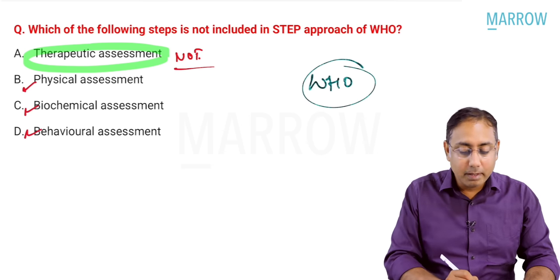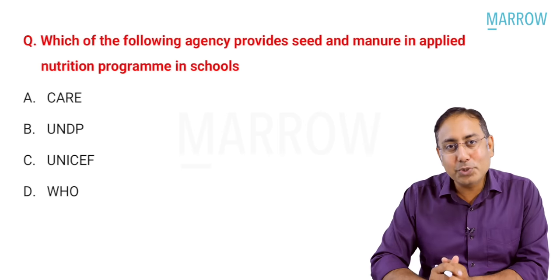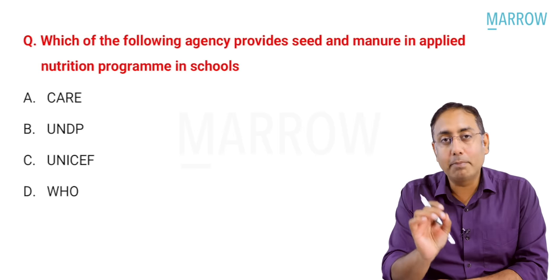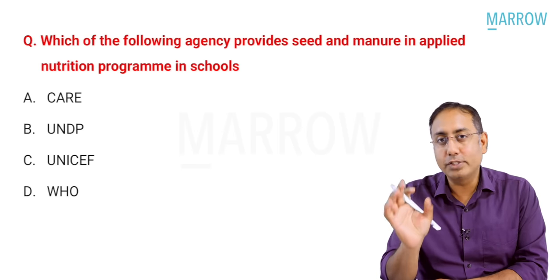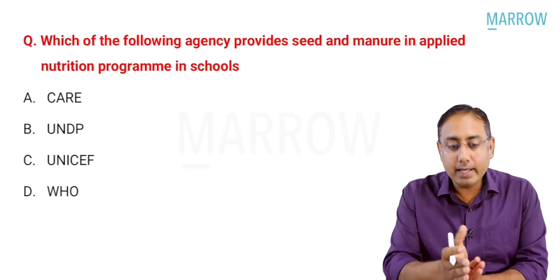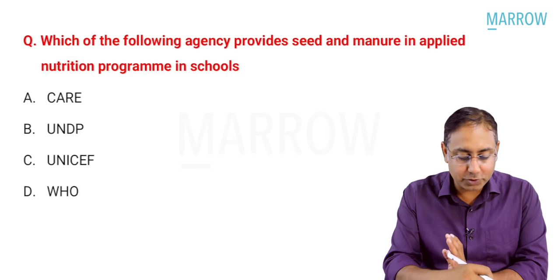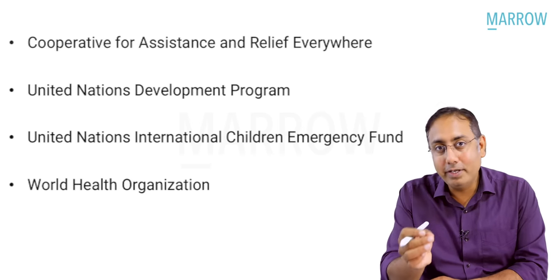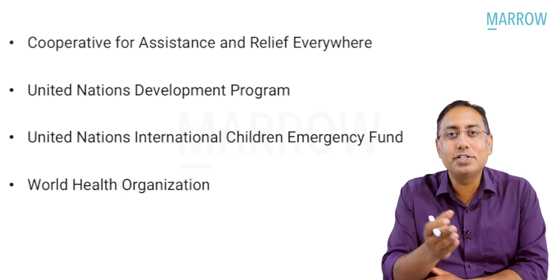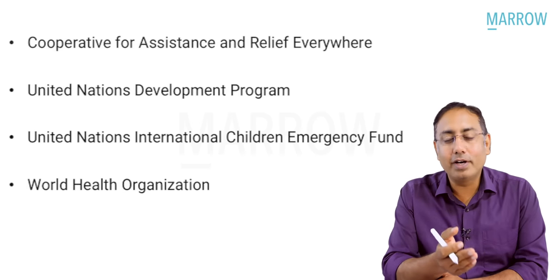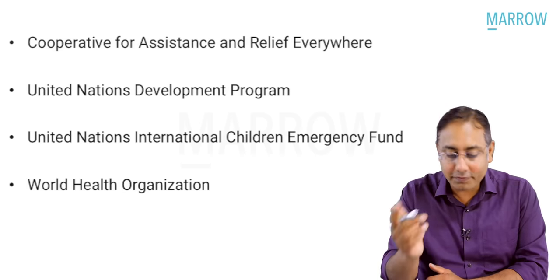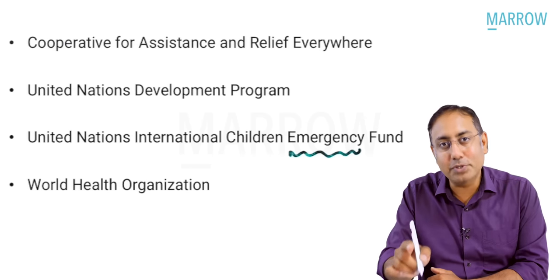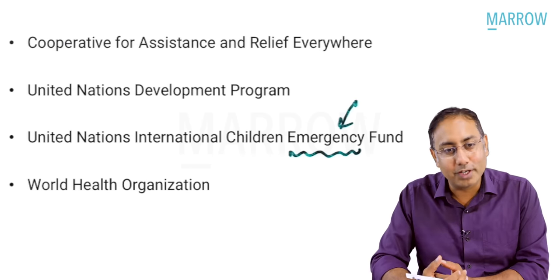Next question: which agency provides seeds and manure in the Applied Nutrition Program in schools? Options were CARE (Cooperative for Assistance and Relief Everywhere), UNDP (United Nations Development Programme), UNICEF (United Nations International Children's Emergency Fund — note it is an emergency fund, not educational), and WHO (World Health Organization).